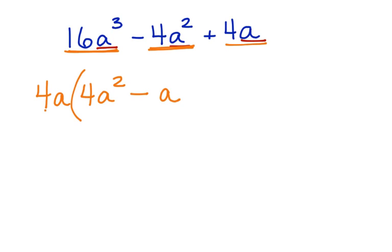And if I take 4a out of 4a, then I'm left with 1. Now I have factored this polynomial up here by taking out the greatest common monomial.